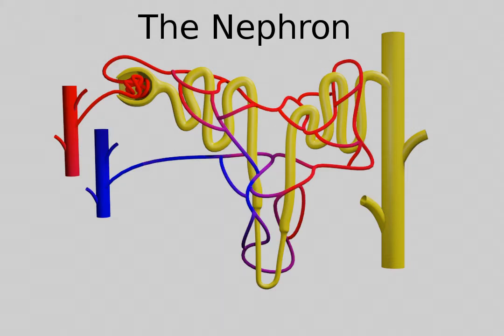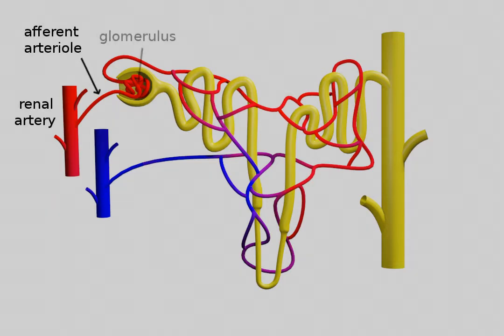Today, we're going to talk about the nephron, the functional unit of the kidney. Blood enters through the renal artery and flows through the afferent arteriole into the glomerulus, where solutes are pulled into the Bowman's capsule.